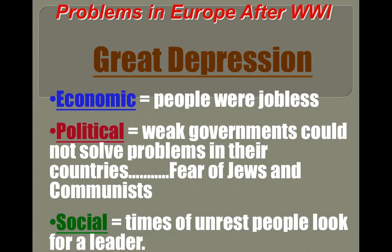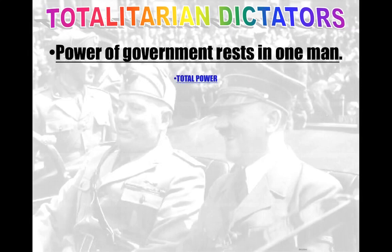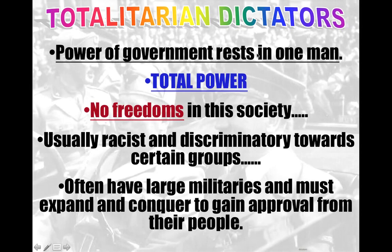Wear a swastika? Back then, people said okay. Now, the definition of a totalitarian dictator: power of the government rests in one man — total power. What's the root word of totalitarian? Total. No freedoms in this society. Usually racist, discriminatory to a certain group — thinking about Hitler and the Jews. Often have large militaries and need to conquer land to gain approval from their people. Think about Hitler: he was racist, he had a large military and started building it up, and he wanted land. There is World War II.